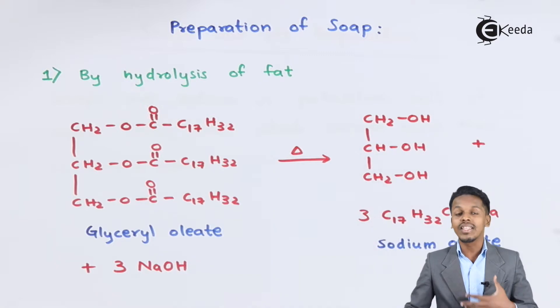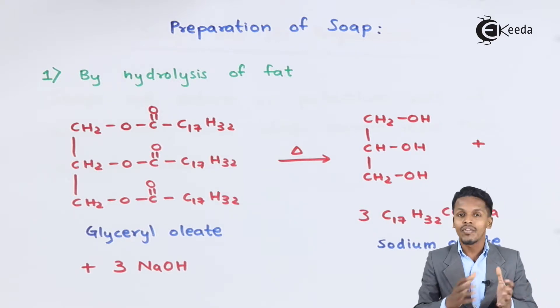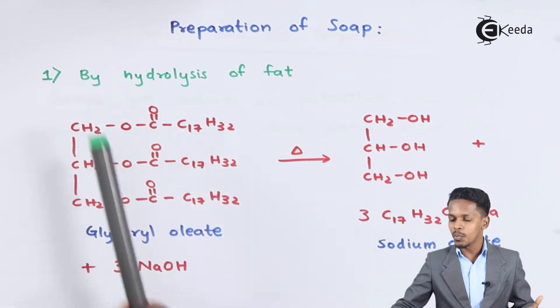This glycerol that has been obtained can be separated by fractional distillation. We can synthesize other products from the glycerol, which is also used in soaps. This is one method where we prepared soap by hydrolysis of fat, by saponification.